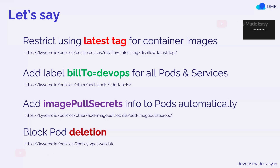Another example is blocking pod deletion — I don't want to delete certain pods in the cluster, probably pods having a certain label. So if someone tries to delete them using kubectl delete or any other command, Kyverno will block that pod deletion. There are various types of policies — generate policies, mutate policies, and validate policies — and we'll see all these examples in detail in the coming videos.